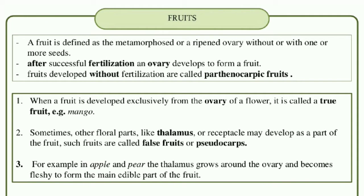Fruit is defined as the metamorphosed or ripened ovary with one or more seeds. Simply, it is a ripened ovary. Ovary before pollination, before fertilization becomes a fruit after pollination, after fertilization, with one or more seeds. After successful fertilization, the ovary develops into a fruit.